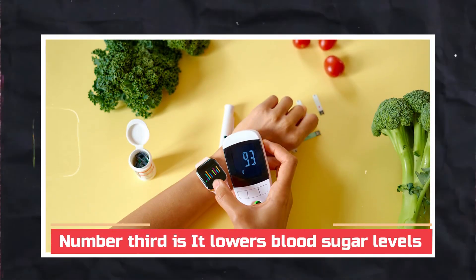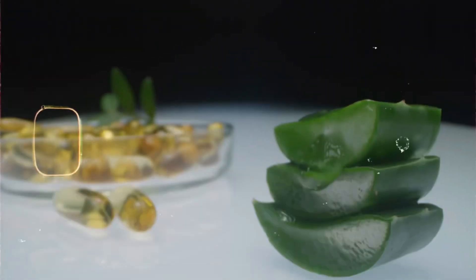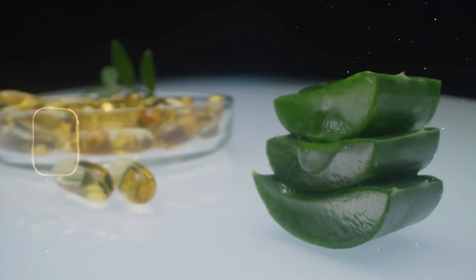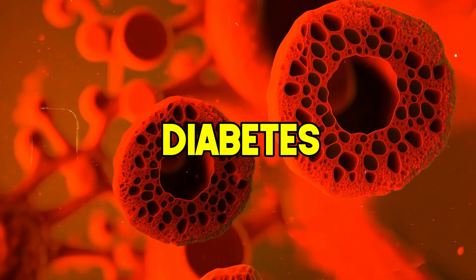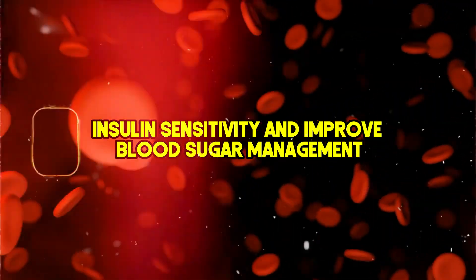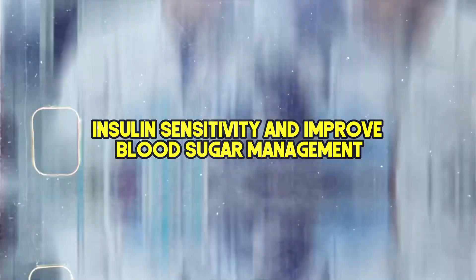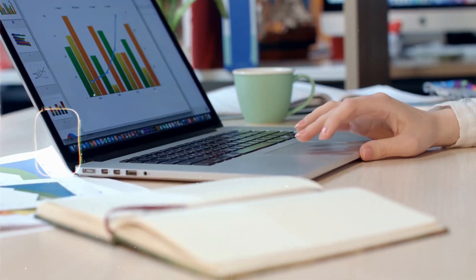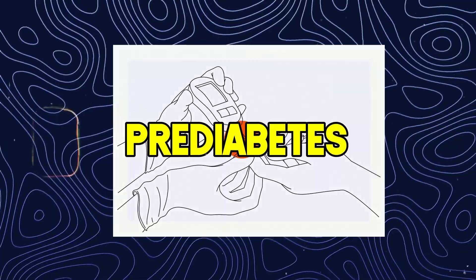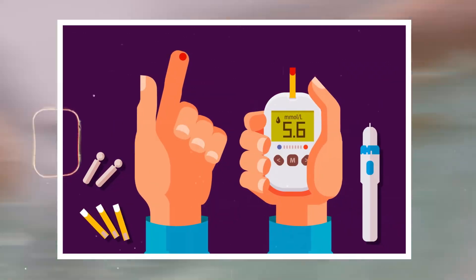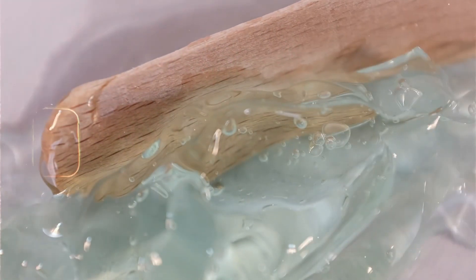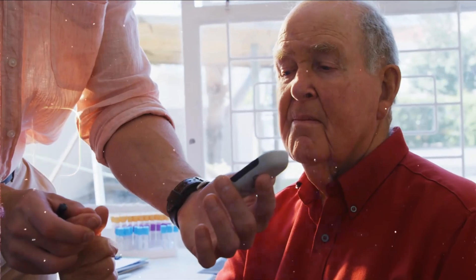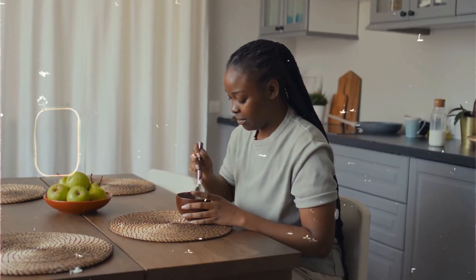Number third is it lowers blood sugar levels. Aloe vera is sometimes used as a natural remedy for diabetes due to its potential to enhance insulin sensitivity and improve blood sugar management. Research held in 2021 found moderate to high-quality evidence supporting the beneficial effects of aloe vera in individuals with prediabetes or type 2 diabetes. This makes aloe vera a promising natural option for those looking to manage their blood sugar levels more effectively.